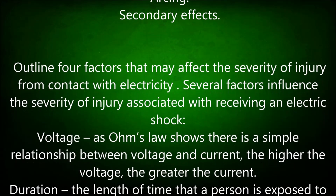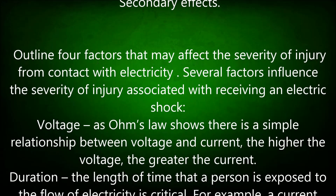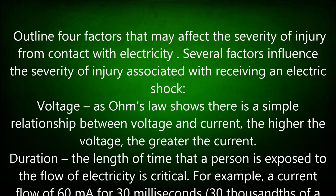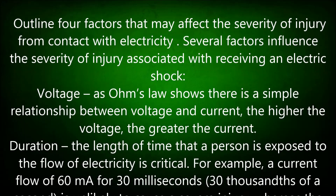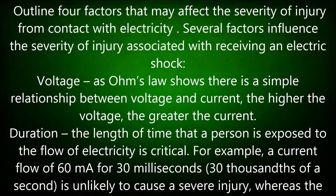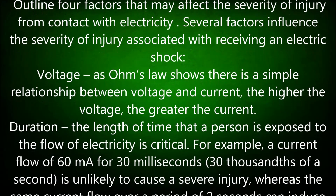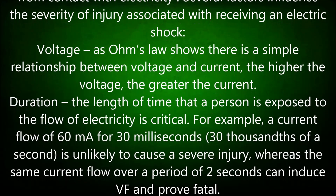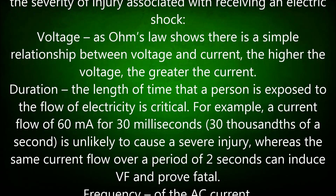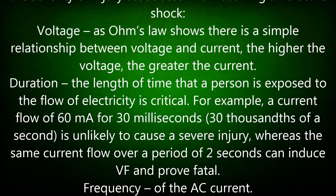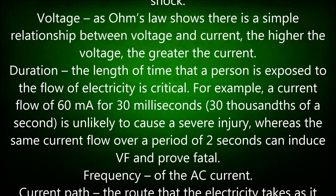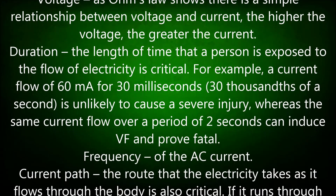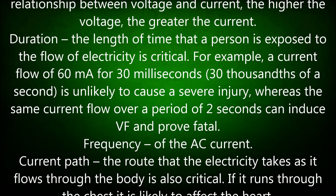Duration. The length of time that a person is exposed to the flow of electricity is critical. For example, a current flow of 60 mA for 30 ms — 30 thousandths of a second — is unlikely to cause a severe injury, whereas the same current flow over a period of two seconds can induce VF and prove fatal. Frequency of the AC current.